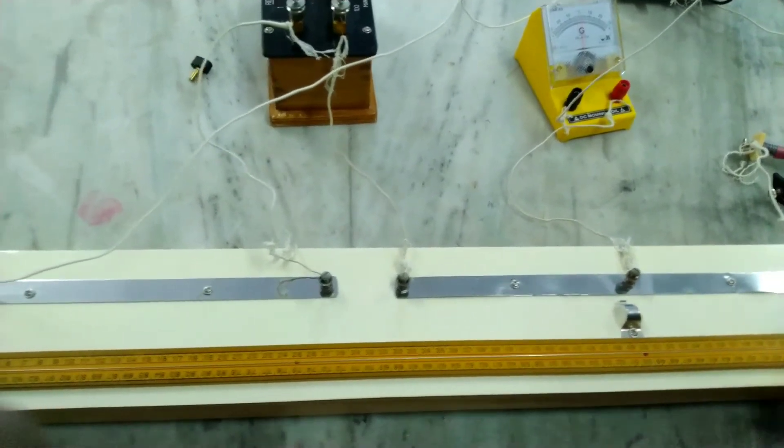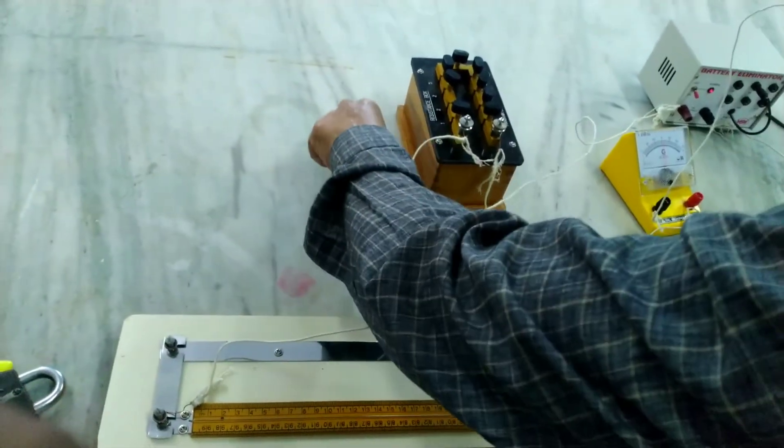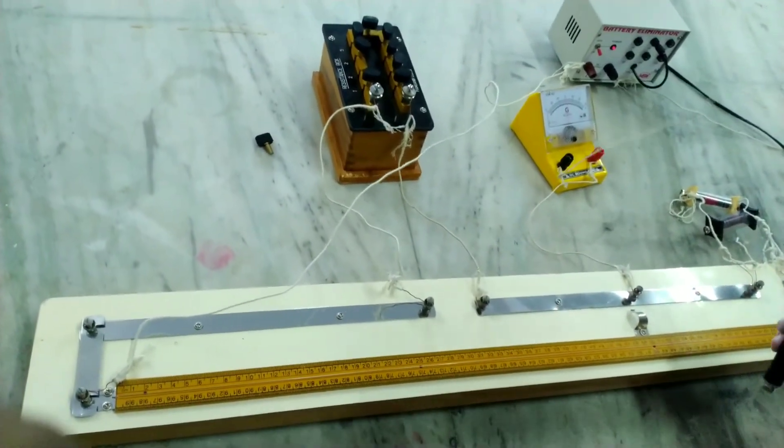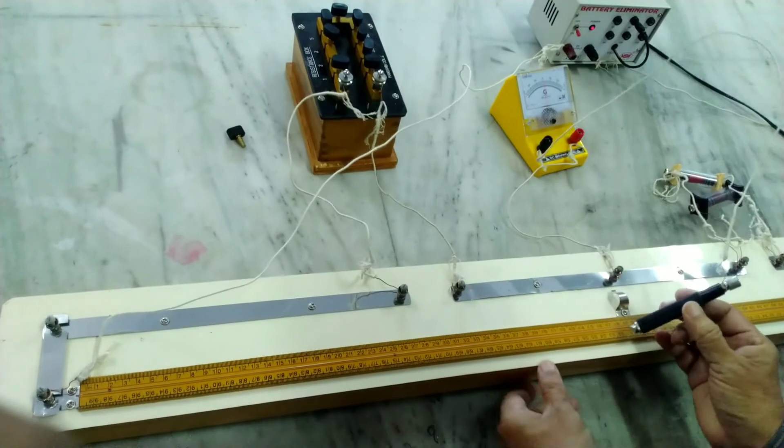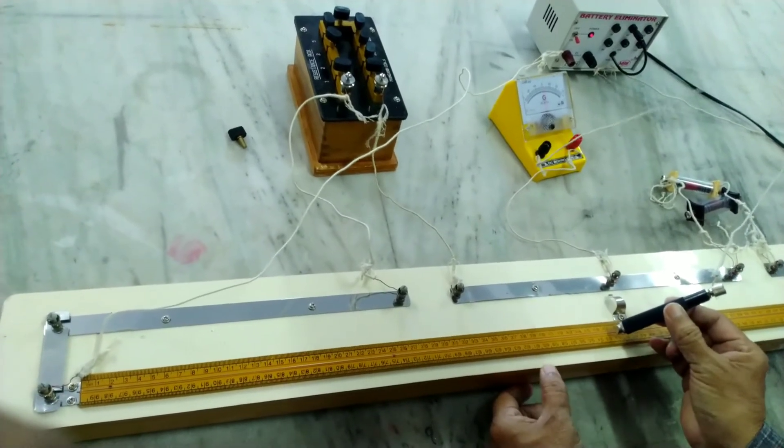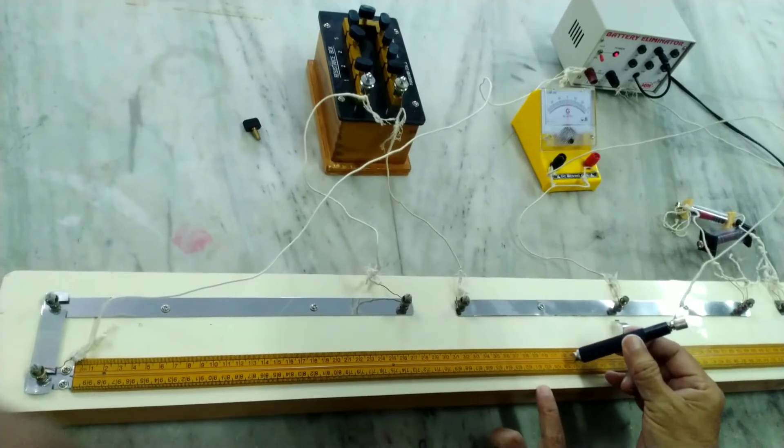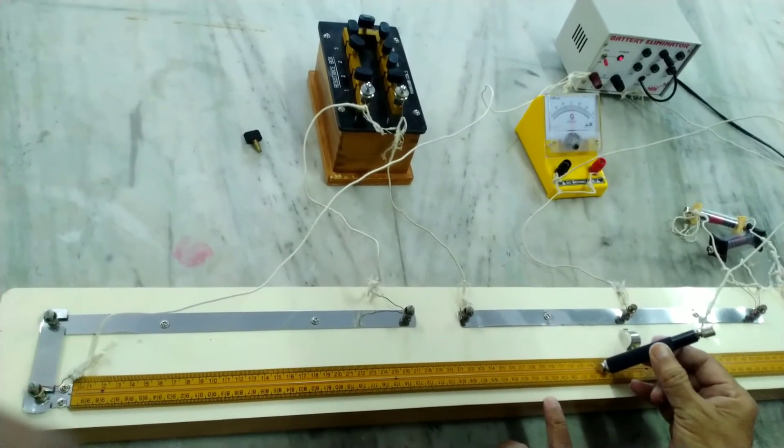Now we are using the value of resistance box as two ohm resistance and finding the balance point. The deflection in the galvanometer should be zero. See here, it goes leftward.